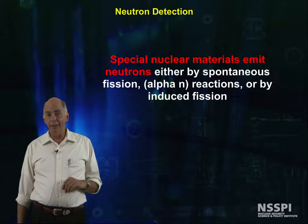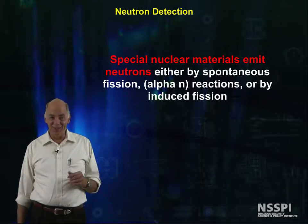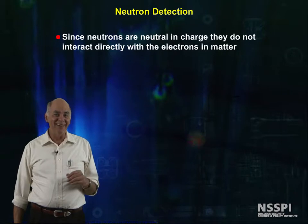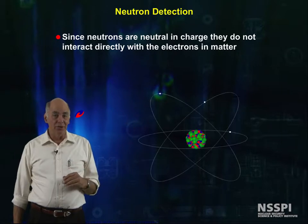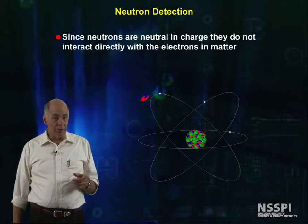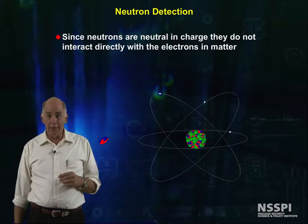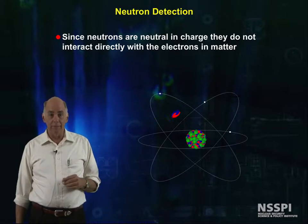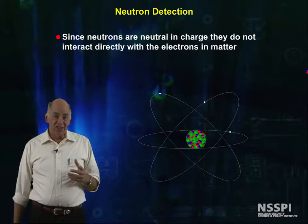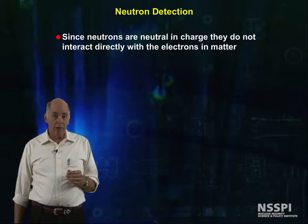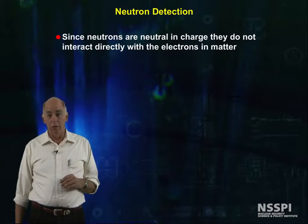On the other hand, detecting neutrons is not easy — they're slippery little devils. As we talked earlier, they're neutral, so they do not interact directly with the electrons in matter. And it seems at first glance that all of our tricks that we've used so far will not work.